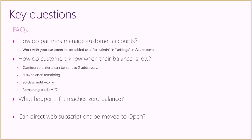What happens if the balance reaches zero? The services are suspended — Open licensing doesn't allow billing in arrears. If the customer runs out of credit, the lights go off effectively. Data is retained for 90 days, and if the customer adds more monetary commitment, services come back up, though some may need to be redeployed. Having those configurable alerts set up and paying attention to them is absolutely key. If they're getting close to zero balance over a weekend, they can place an emergency credit card order through the portal to keep things ticking over.